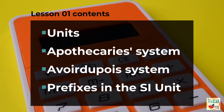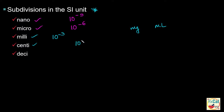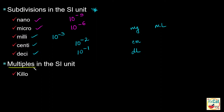Prefixes in the SI unit. The following are some subdivisions — all smaller than 1. Nano is 1 billionth, or 10 to the power of minus 9; for example, plasma concentration of a drug in nanograms per mL. Micro is 1 millionth, or 10 to the power of minus 6; for example, micrograms of a drug per mL. Milli is 1 thousandth, or 10 to the power of minus 3; for example, milligram, milliliter, etc. Centi is 1 hundredth, or 10 to the power of minus 2; for example, centimeter. Deci is 1 tenth, or 10 to the power of minus 1; for example, deciliter of blood volume.